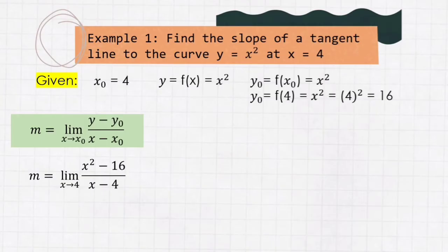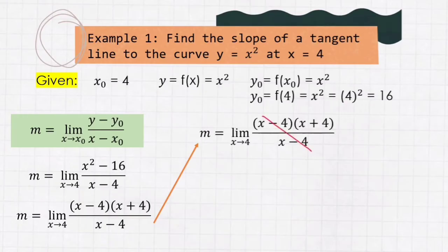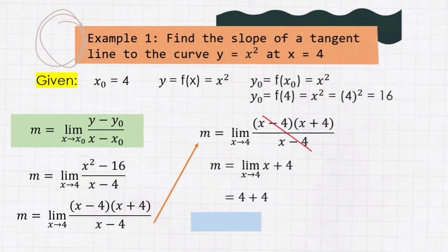So we need to factor the numerator to avoid an indeterminate value. By factoring, we get m = limit of (x − 4)(x + 4) / (x − 4) as x approaches 4. We can cancel out (x − 4) in the numerator and denominator, leaving m = limit of (x + 4) as x approaches 4. Substituting, we get 4 + 4, so our final answer is m = 8.